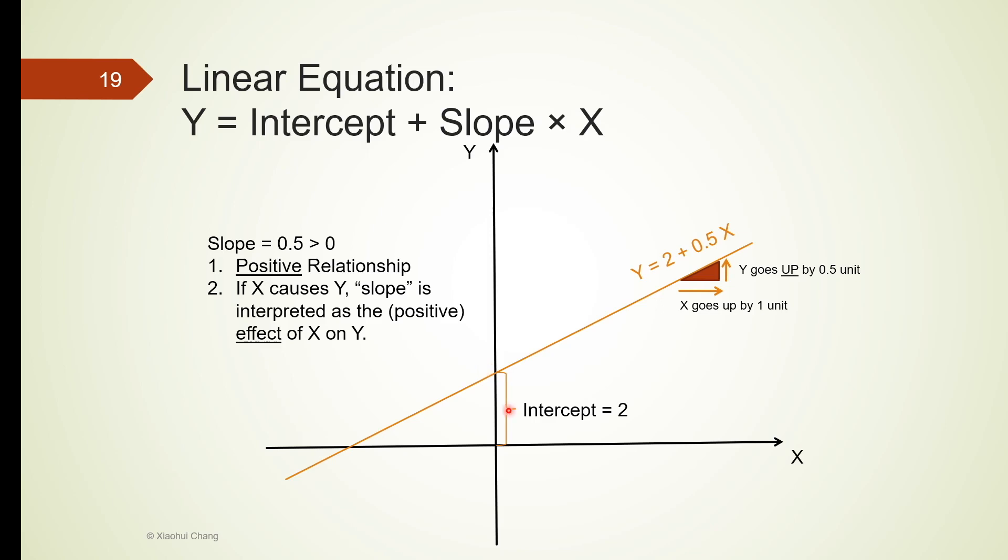The first case we consider here is when the slope is positive. Say the slope is half, which is a positive number. A slope of half means whenever x goes up, y also goes up. More specifically, when x increases by every one unit, y increases by half a unit.